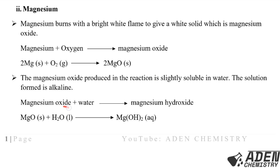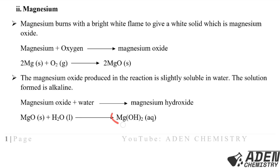Magnesium oxide plus water gives us magnesium hydroxide. Note that magnesium hydroxide and calcium hydroxide are slightly soluble in water. The balanced chemical equation is: one mole of magnesium oxide (solid) reacts with one mole of water (liquid) giving one mole of magnesium hydroxide in solution, which is alkaline.